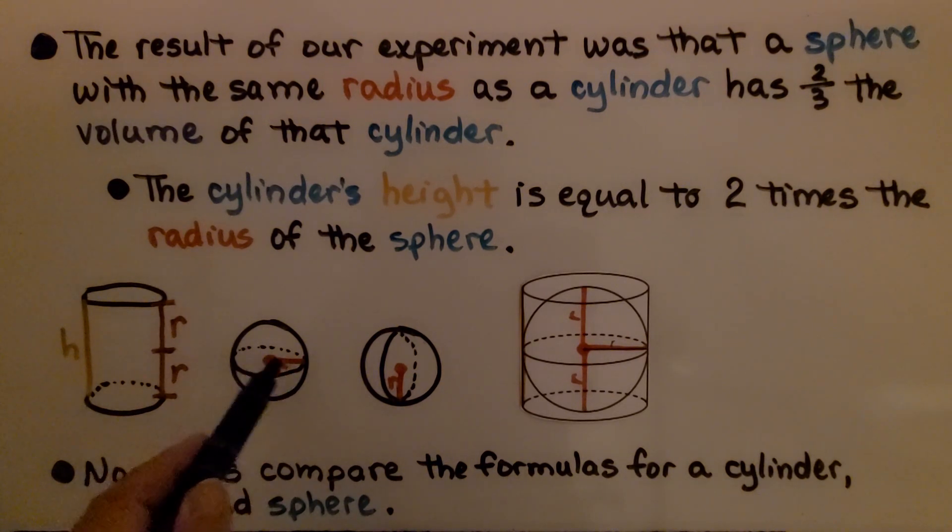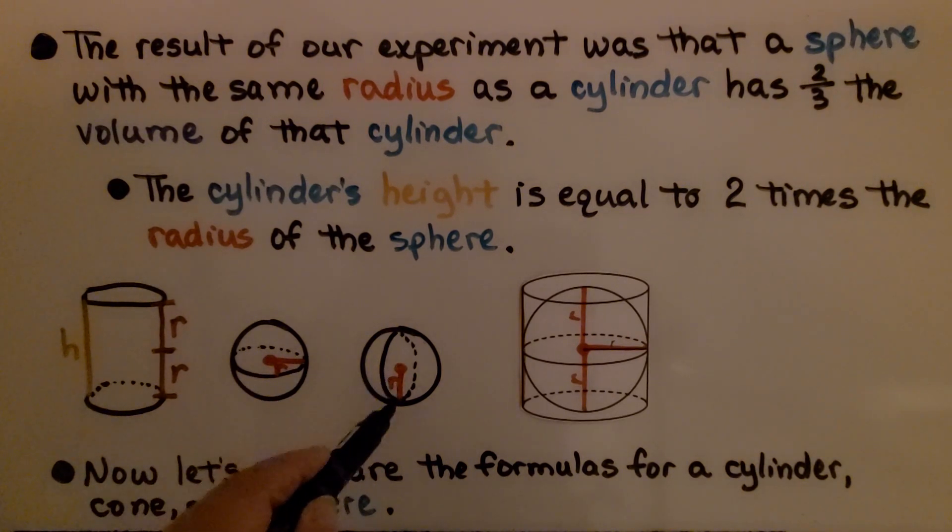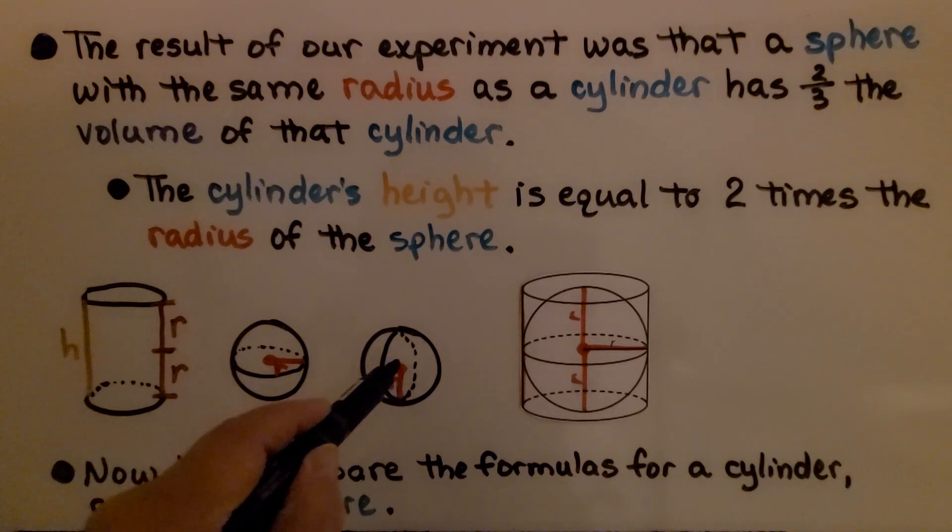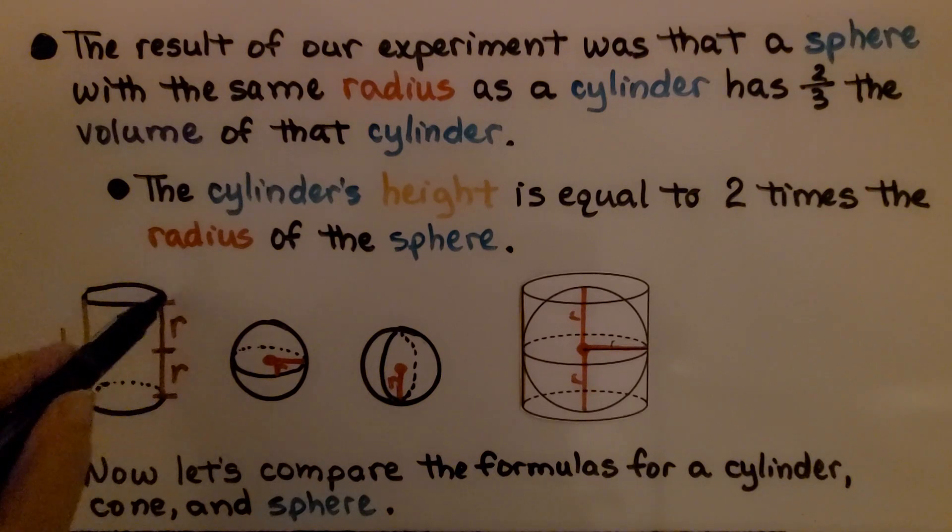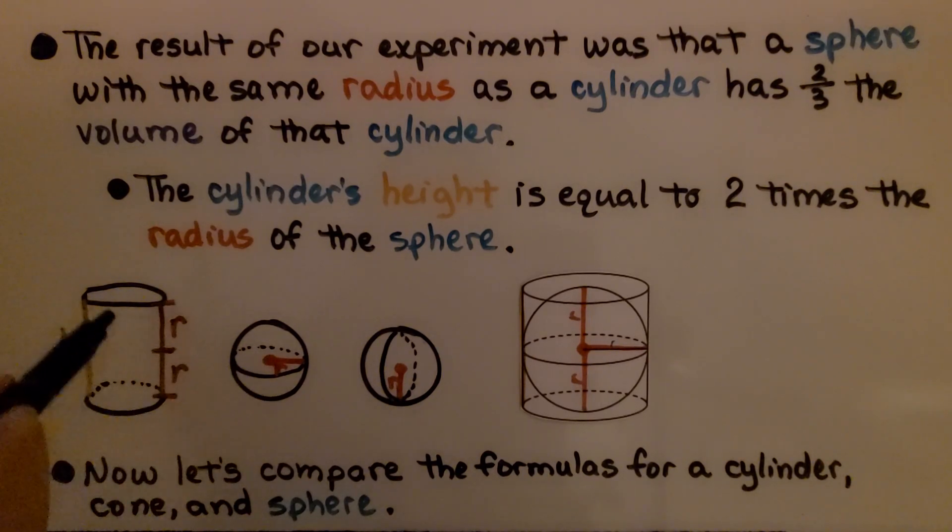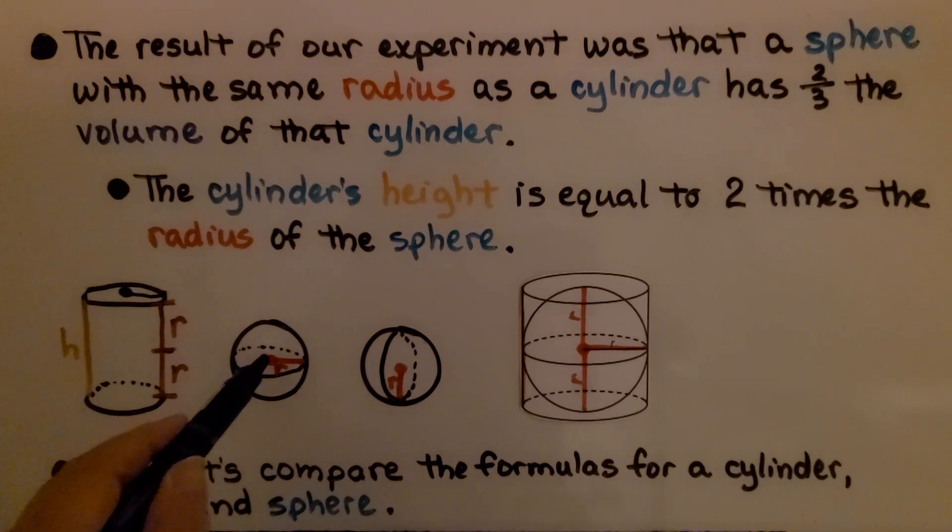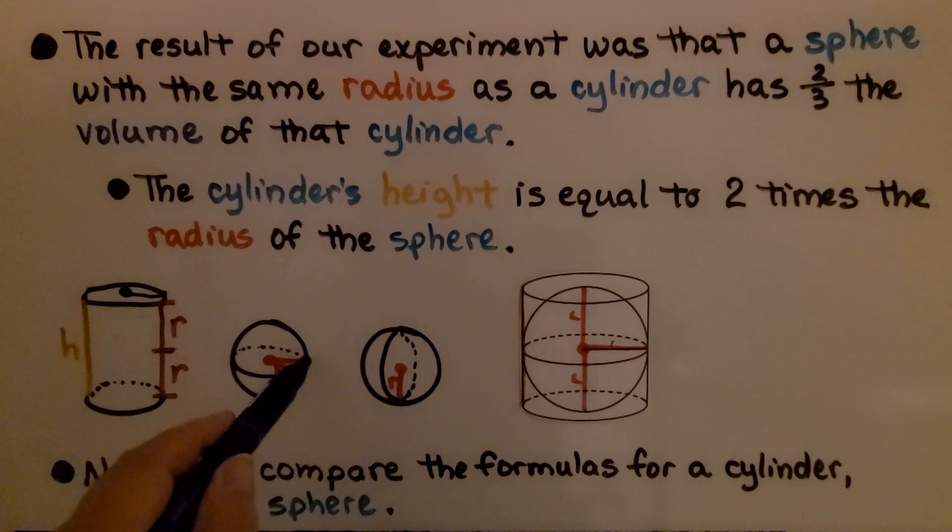The cylinder's height is equal to two times the radius of the sphere. So here we have the radius of the sphere. If we turn it sideways, it will take two of these radii for the height of that cylinder. That's when they have the same radius.